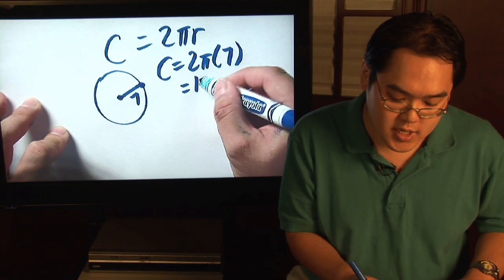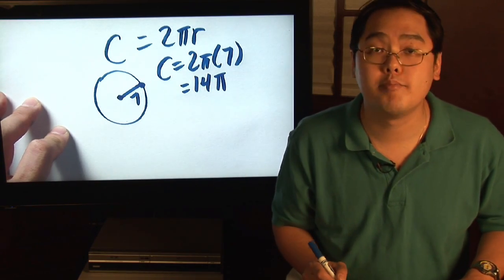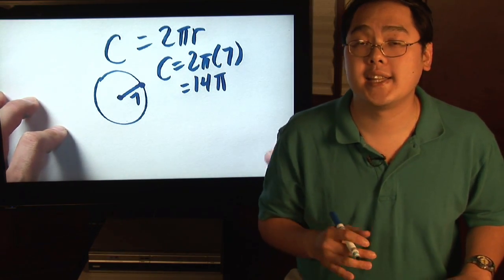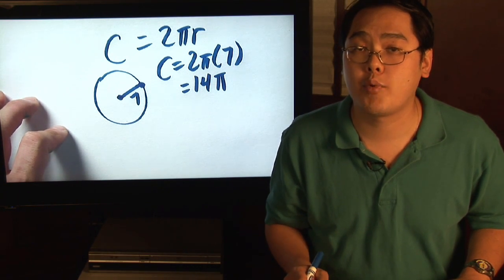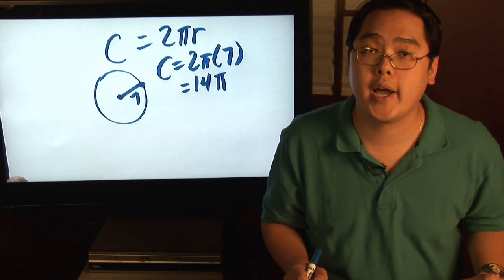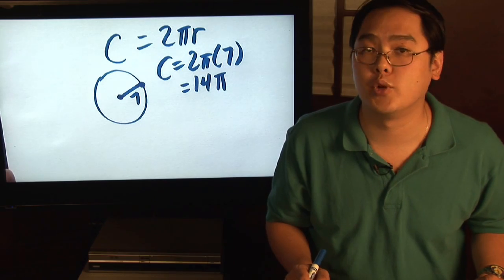2 times 7 is 14, so it'll be 14 pi for the circumference. That's the exact value. If you want to find the approximate value, just put in 14 pi on your calculator, and you'll get more of a decimal answer.